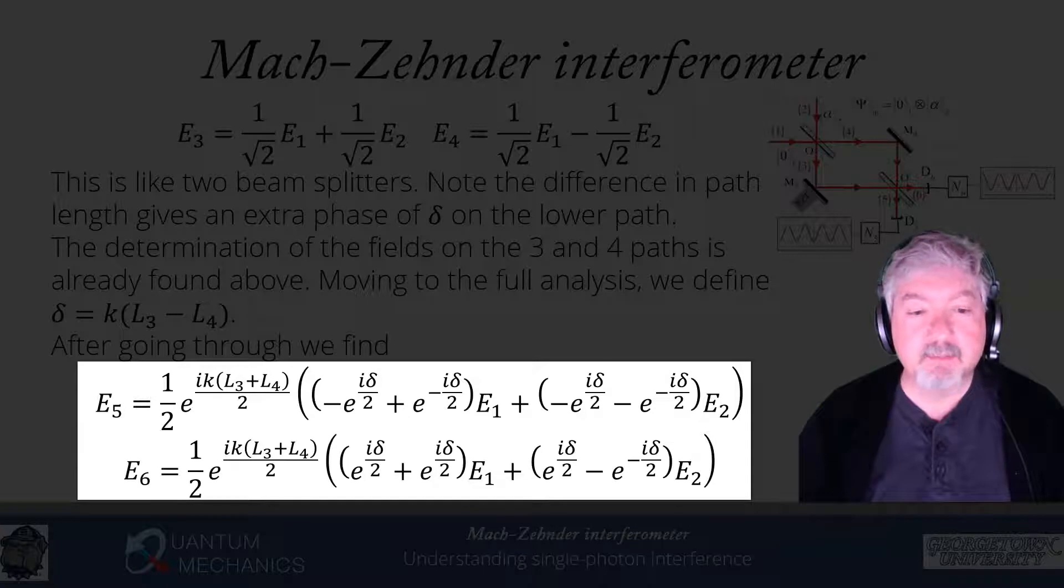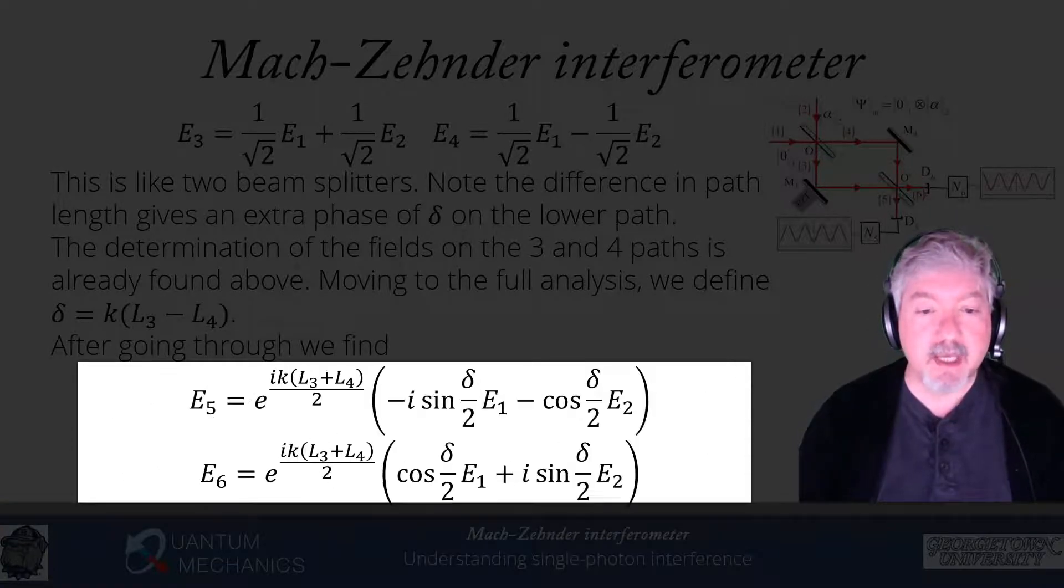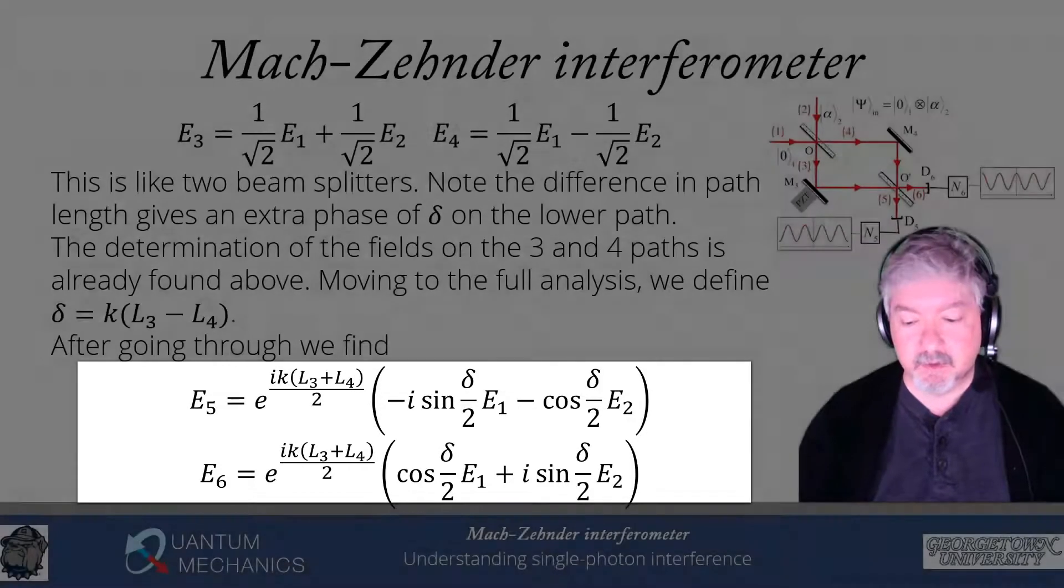In E6, E1 is multiplied by e to the i delta over 2 plus e to the minus i delta over 2, that should be minus i delta over 2, small typo there, plus e to the i delta over 2 minus e to the minus i delta over 2, multiplying E2. Now we just use the definitions of cosine and of sine, and we can rewrite those in terms of cosines and sines. What we find is E5 has that phase factor in front, and then it's minus i sine delta over 2 times E1 minus cosine delta over 2 times E2. And the E6 is cosine delta over 2 E1 plus i sine delta over 2 E2.